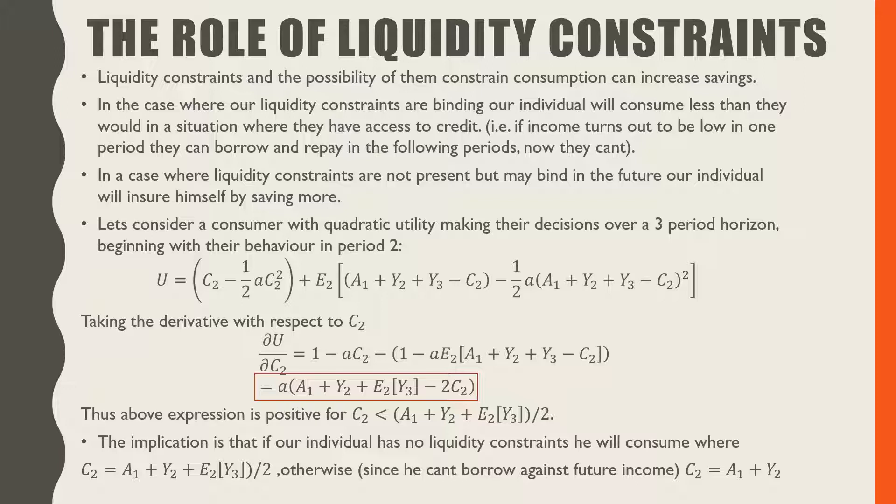Times the endowment at the start of period from period one to period two, plus the income from period one, plus the expected labor income from period three based on the information in period two all over two.